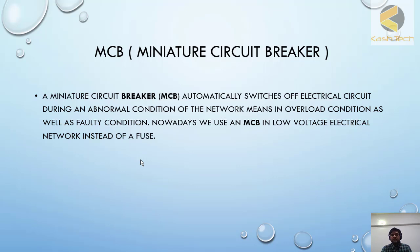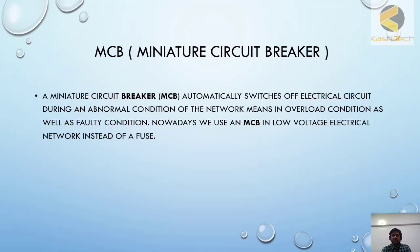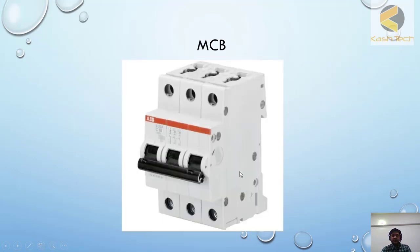Nowadays we use an MCB in low voltage circuit networks instead of a fuse. In old days, a fuse was mostly used — it was just like a wire. If you used a wire of 5 ampere and the current flowed more than 5 ampere, it would melt down and you had to put in a new fuse to restore the circuit. But nowadays we use an MCB. This is the shape of an MCB.